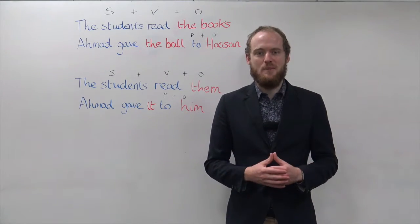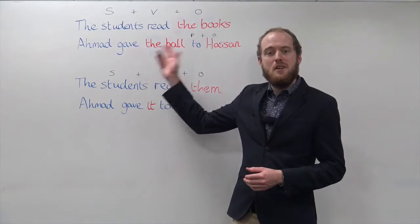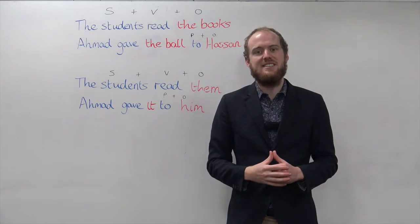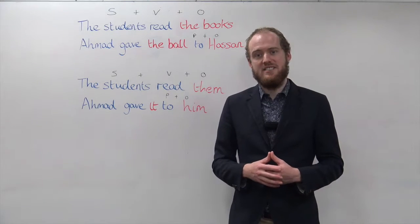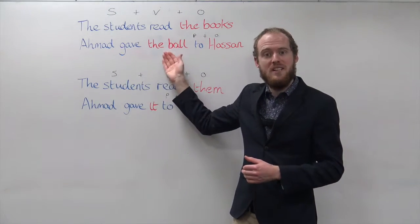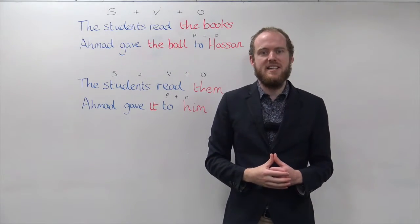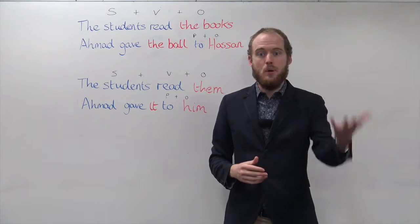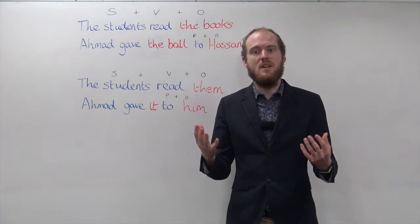For example, look at this sentence: 'The students read the books.' The books is the object of the sentence. Now let's look at a second sentence: 'Ahmed gave the ball to Hassan.' How many objects do we have in this sentence? Yes, two. Ahmed gave the ball to Hassan — Hassan and the ball are both objects.